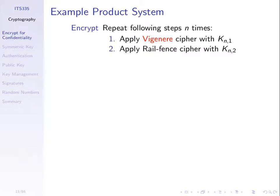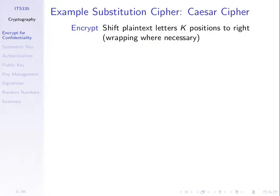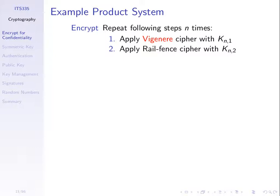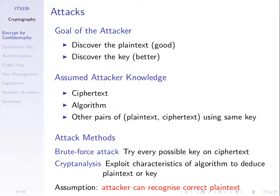Most of the examples we'll look at are block ciphers; we'll mention one or two stream ciphers. A product system applies a substitution operation like the Caesar cipher but more complex, then applies a transposition operation, then repeats that — using the same operations but keeping repeating until you have secure output. The goal is for the attacker to find the plaintext — or even better, find the key.